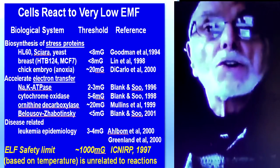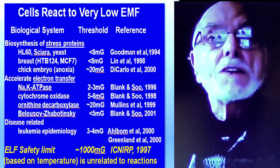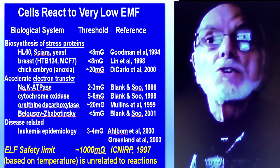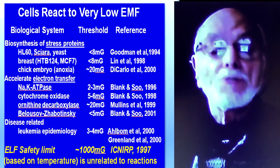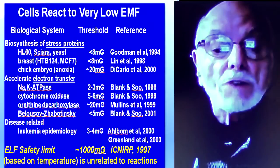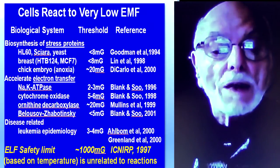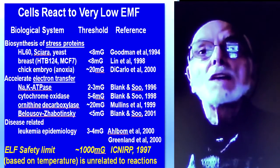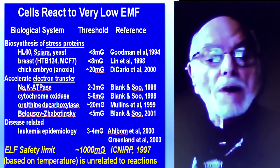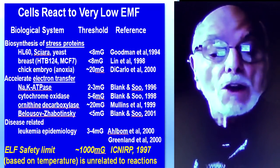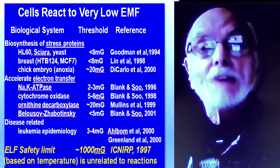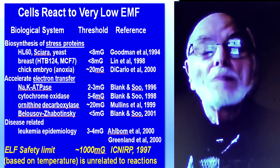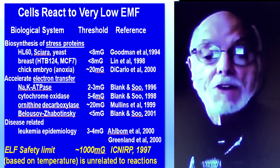The next slide shows a list of various biochemical reactions that have been studied, showing that many reactions are influenced at relatively low levels — around eight milligausses, two to three milligausses, five milligausses. These are relatively low compared to the thousand milligauss safety standard, which is the lowest line on that slide — the actual safety standard set by the standards body in the United States.